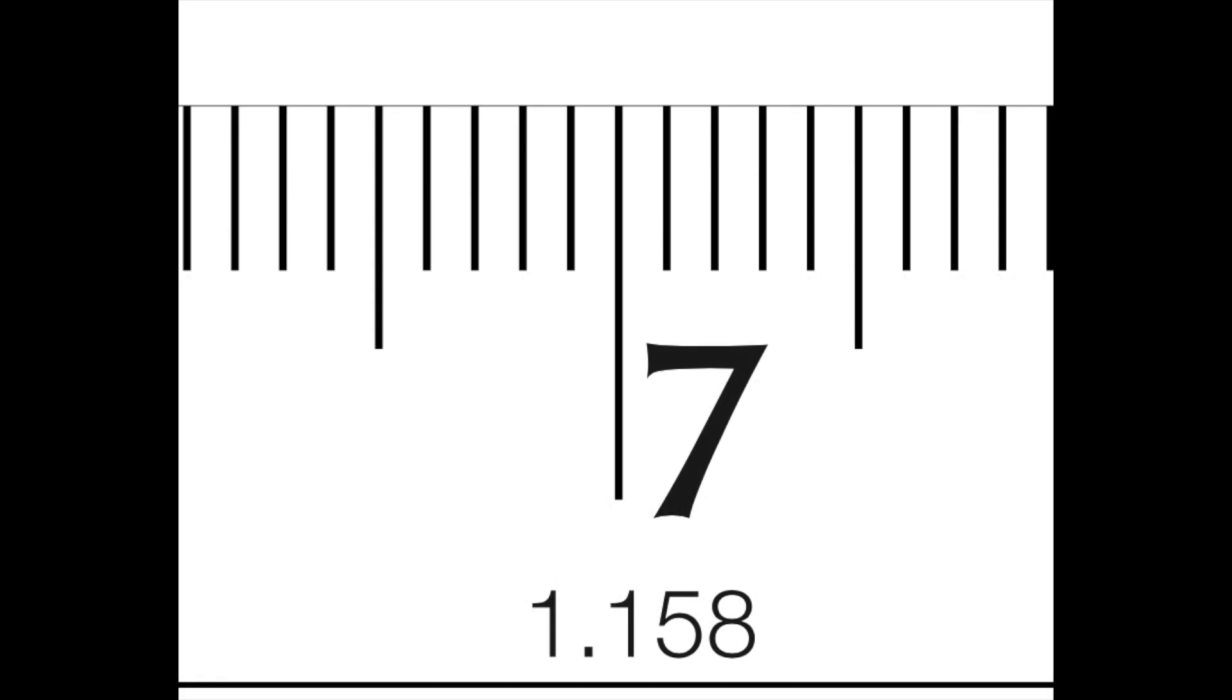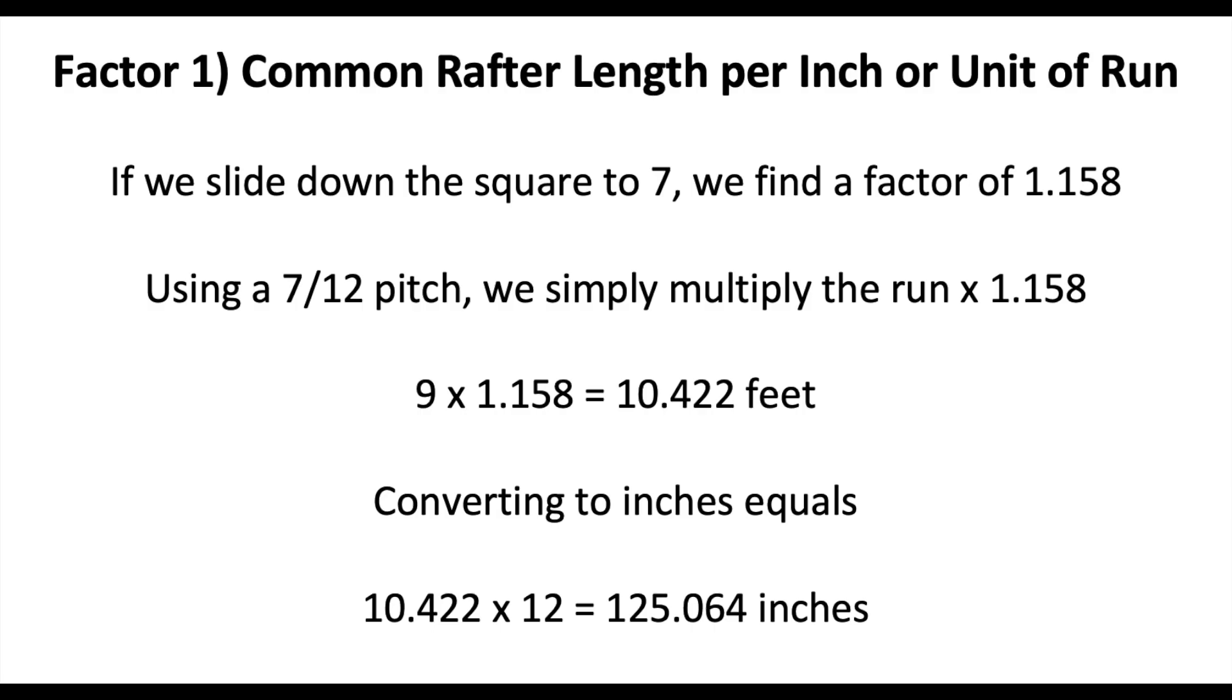If we move down the row to the column under 7, we find the value to be 1.158. The length of a rafter of the same run, 9 feet, with a pitch of 7 over 12 would be, 9 times 1.158 is equal to 10.422 feet. Converted to inches is equal to 10.422 times 12 equals 125.06 inches.